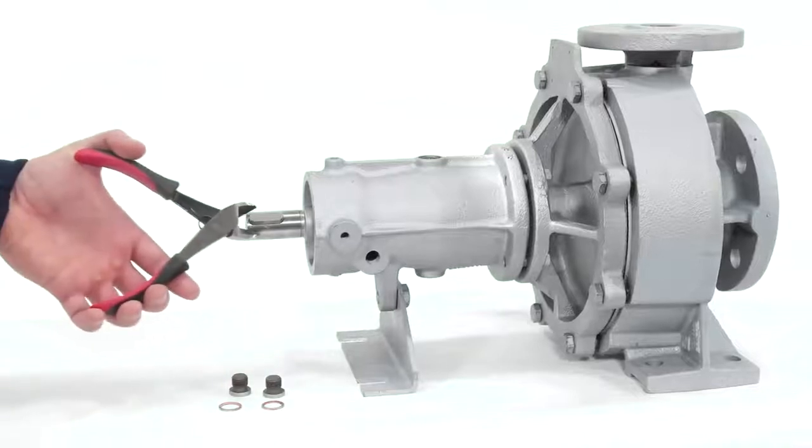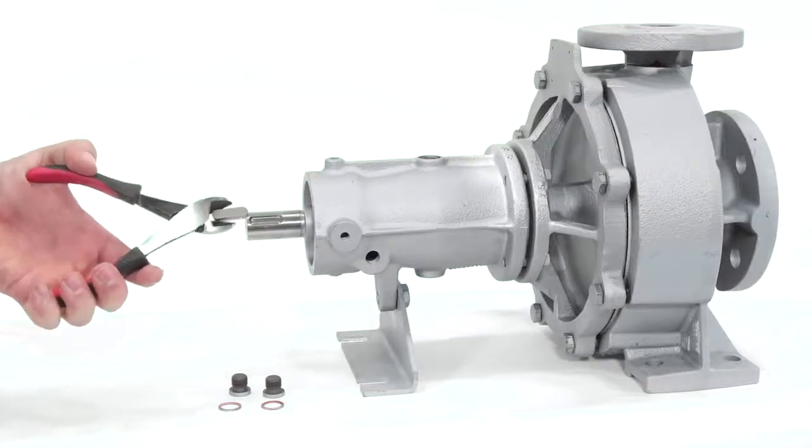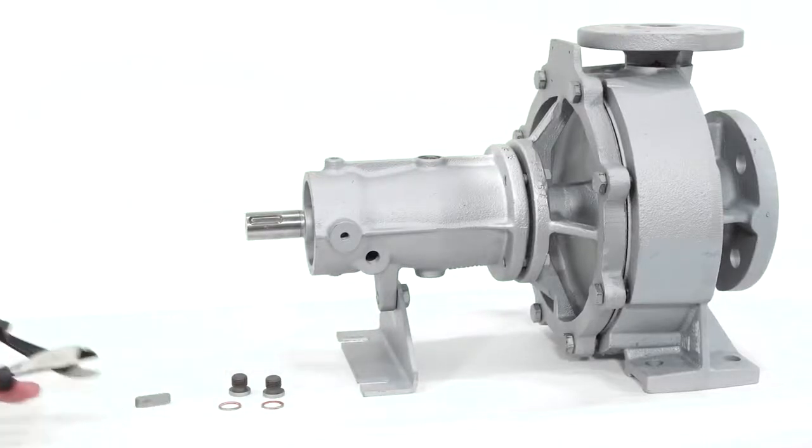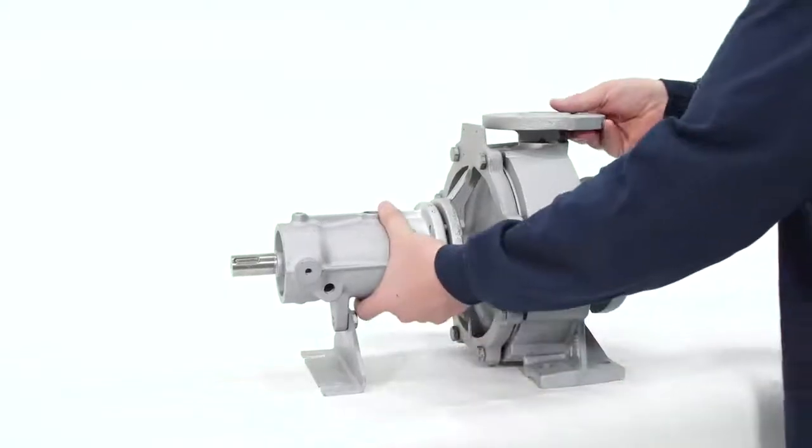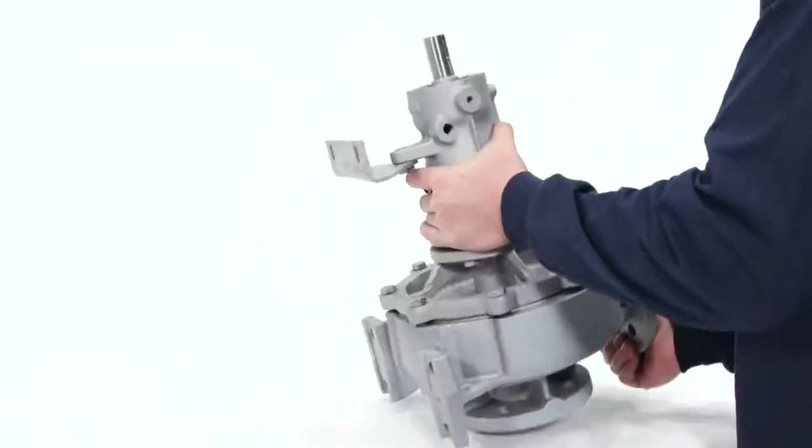Remove the key from the keyway using a pair of side cutters. Take care not to damage the key. Reposition the pump vertically on the workbench with the drive shaft facing up.